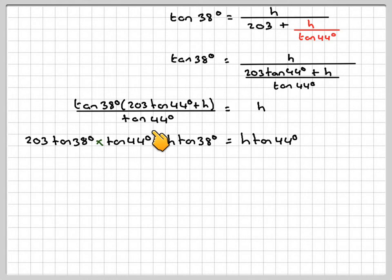Now this tan 44 I'm going to take up here, so it becomes h tan 44. And now what I'm going to do is take h tan 38 over here. So we get 203 tan 38 times tan 44 is equal to h tan 44 minus h tan 38.